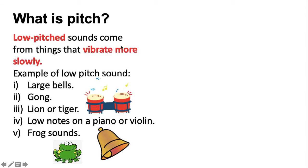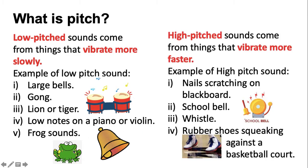A low pitch sound comes from things that vibrate more slowly. Examples of low pitch sounds are large bells, gong, lion or tiger, low notes on piano or violin, and a frog sound.